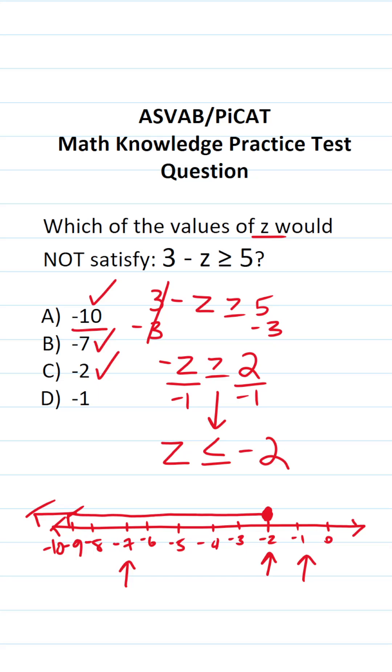Negative 1 is right here. You can see that there's no line or closed circle above negative 1. Therefore, negative 1 does not satisfy the inequality 3 minus z greater than or equal to 5.